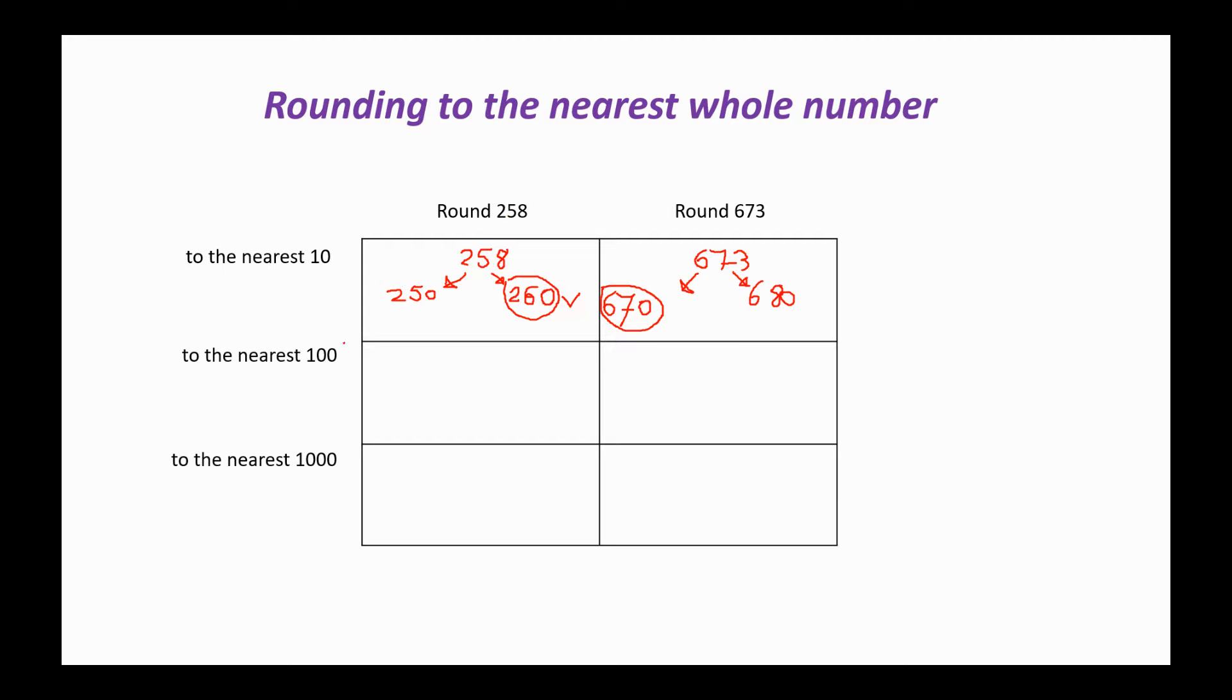So 258 to the nearest 100. The 100 that comes before this would be 200, and the 100 that comes afterwards would be 300. A little bit trickier this time, but if we think about it, the number that's right in the middle is 250. And 258 is bigger than that, so we're going to round up. We're going to go with 300 as our answer.